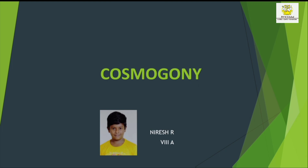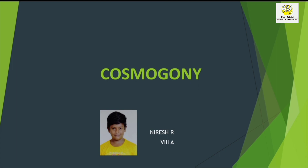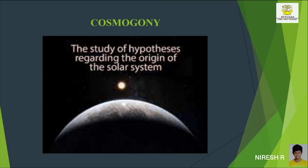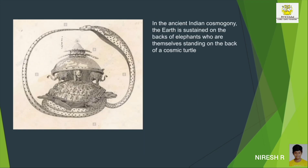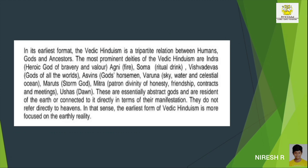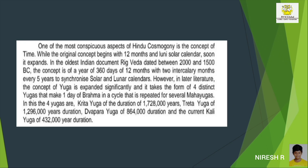I am Neresha of Class 8A, talking about Cosmogony. Definition — Cosmogony: cosmos means order, gonos is the Greek word for birth. Cosmogony is a theory concerning the creation of the universe, or the study of hypotheses regarding the origin of the solar system. It is a scientific theory concerning the coming into existence or origin of the cosmos or universe, or about what sentient beings perceived as reality came to be. In ancient Indian cosmogony, the earth is sustained on the backs of elephants who are themselves standing on the back of a cosmic turtle.